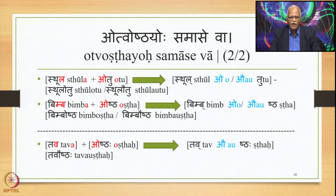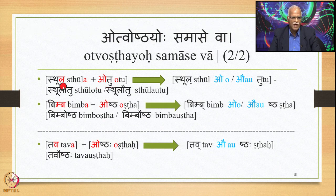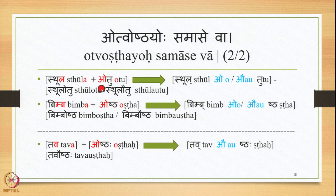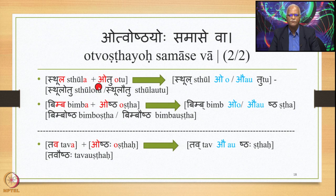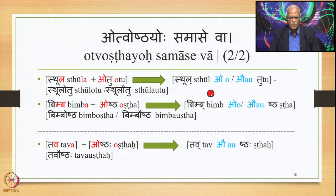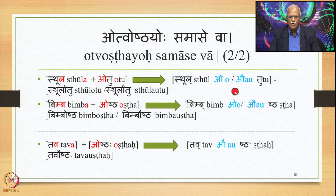Here are the examples. Thula plus O2 as a compound (Samasa): the first pada Thula ends in short A, followed by O2 starting with O. So we have A plus O — the case for Vriddhi Sandhi. But because of this Vartika, Pararupa Sandhi applies first: in place of A and O, the Pararupa O is substituted, giving Thula + O + 2. Since this is optional, Vriddhi Sandhi also applies, giving either Stulau2 or Stulo2 as the output.